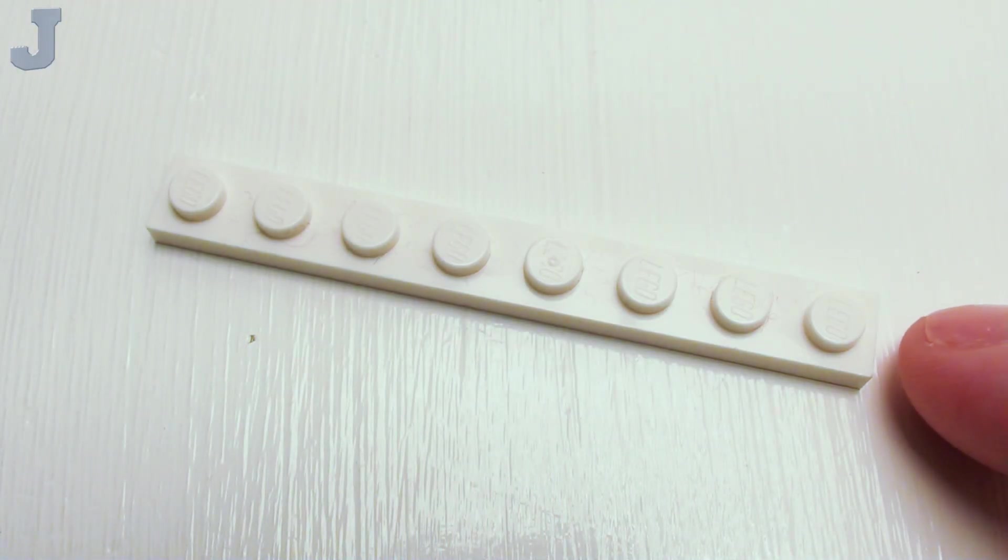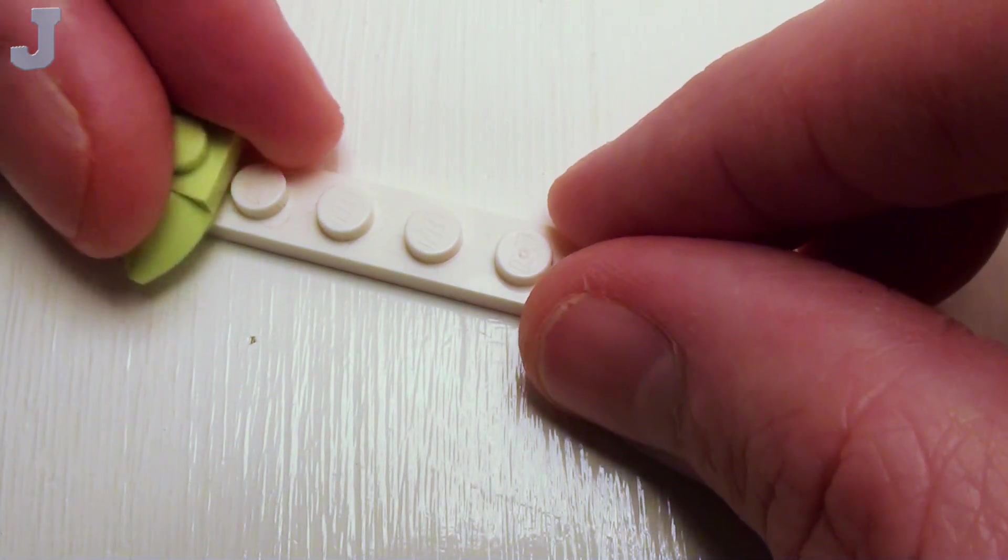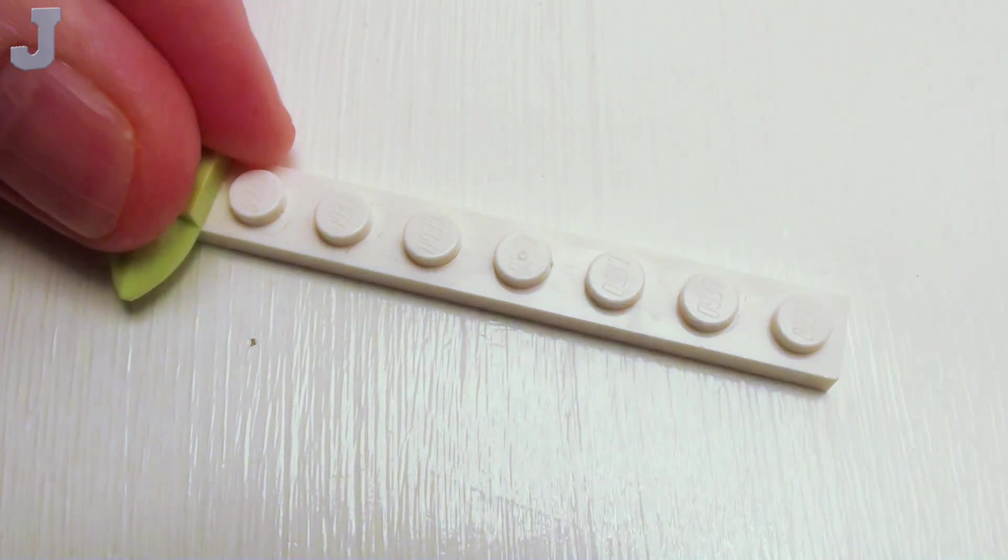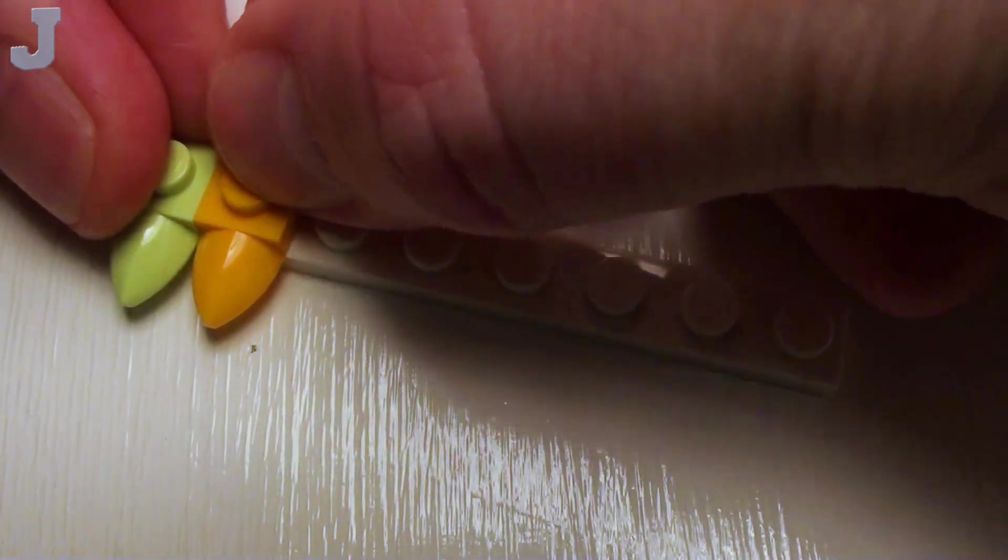For the bottom portion of our awning, let's take a 1x8 plate. I'm going to set down eight 1x1 plates with teeth on the plate.